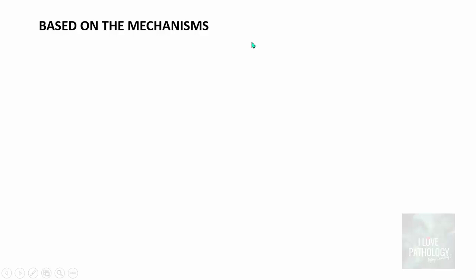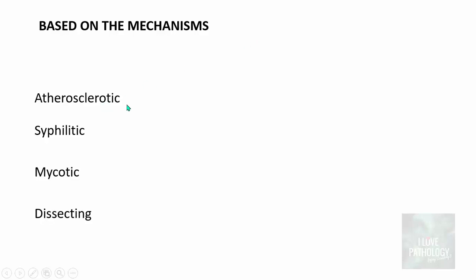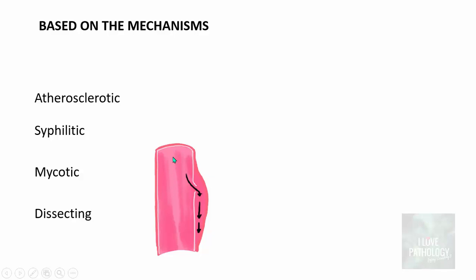Based on mechanisms, aneurysms can be categorized as atherosclerotic aneurysms, syphilitic aneurysms, mycotic aneurysms (due to infections), or dissecting aneurysms. In a dissecting aneurysm, blood enters the separated or dissected wall and travels for a particular distance.